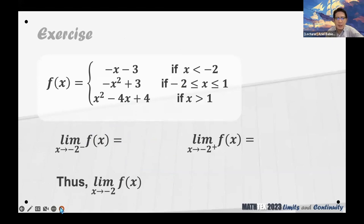Let's do some more. Again, you can draw the graph of the function if you want, but alternatively, you can simply rely on how the function was defined. Using one-sided limits, what can you say about the limit of the function as x approaches negative 2?